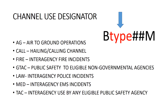The channel use designator is a three or four character tag used to signify the primary purpose of operations on the channel. In some cases, the channel use has been specified in FCC rules or related orders. These tags include, but are not limited to: AG for air-to-ground operations; CALL, designating a hailing or calling channel; FIRE, a channel reserved primarily for fire incidents and agencies; GTAC, for use by public safety agencies to communicate with non-governmental agencies such as a power company or the American Red Cross. The designator LAW is reserved for police and law enforcement use exclusively, while MED indicates a channel provided for EMS use, and lastly TAC, which is a channel that can be used by any eligible public safety agency regardless of discipline.